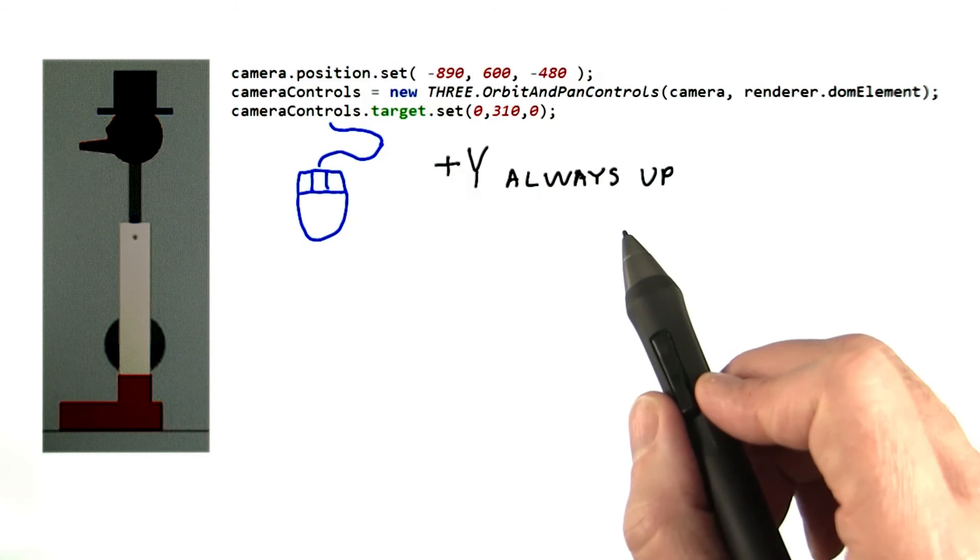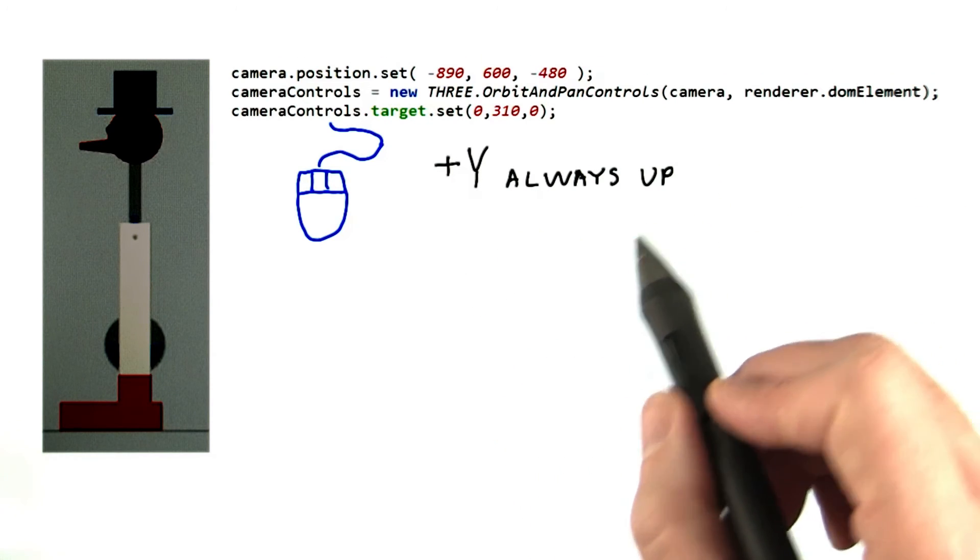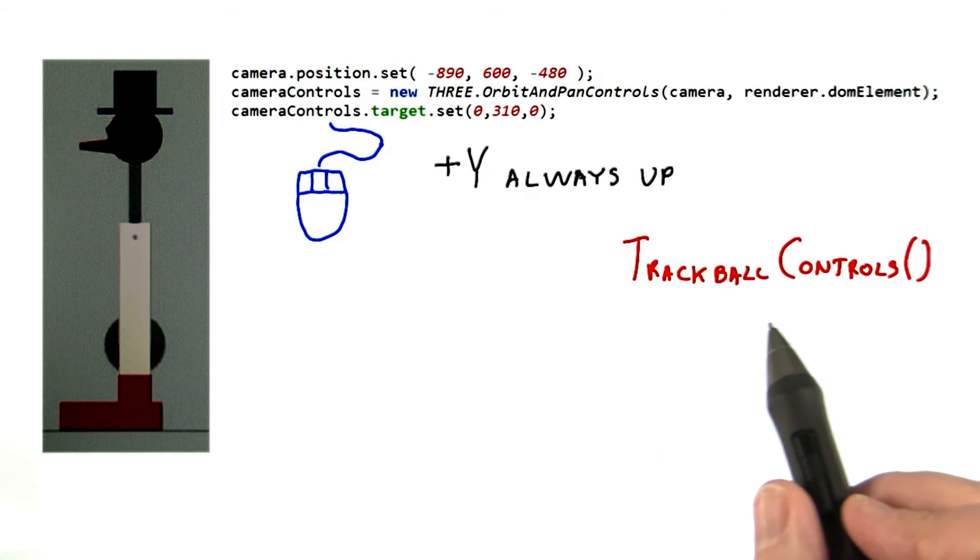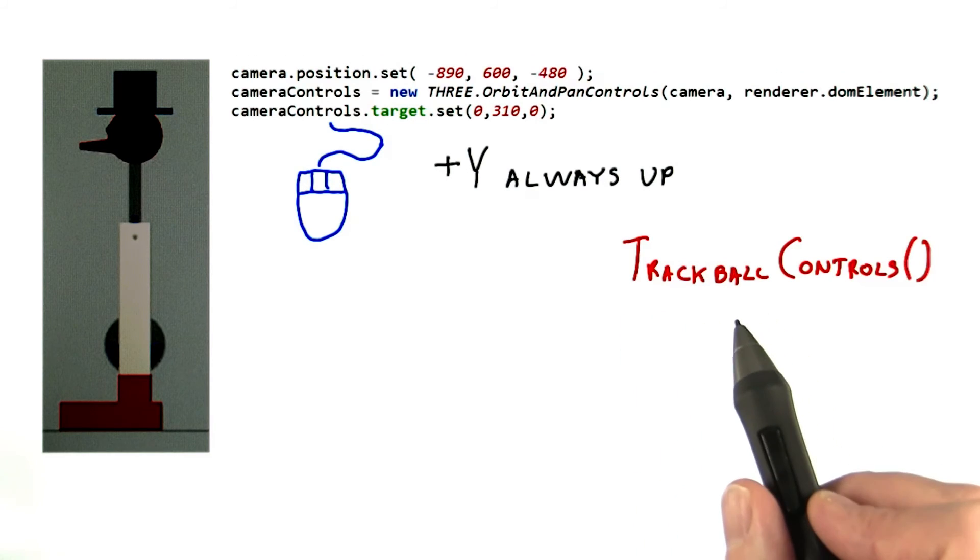This control keeps the camera oriented so that the plus y axis is always up. For a more unconstrained but trickier to use control, the trackball controls class could be specified instead.